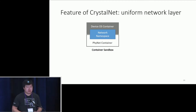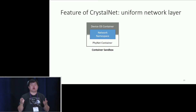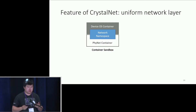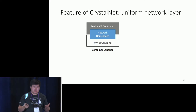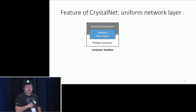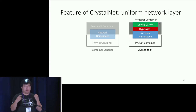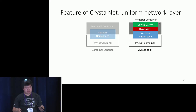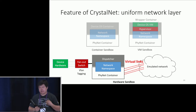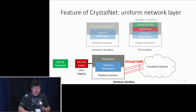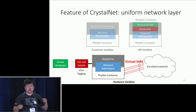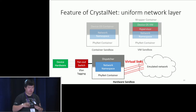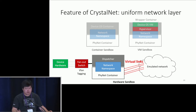Concretely, the device sandbox can be a container, a VM, or even hardware. For a container, after the base network layer is set up, we run the device OS container on top and share the namespace. For a VM, we run a wrapper container on top of the base container, run the hypervisor inside it, and then run the VM in the hypervisor. For hardware, we use a flex switch to distinguish which interface a packet comes from, tag it to different VLANs, and have a dispatcher container running on top of the base container that reads the VLAN tag and forwards the packet to the correct virtual link in the emulated network. This supports container, VM, or hardware device sandboxes uniformly.